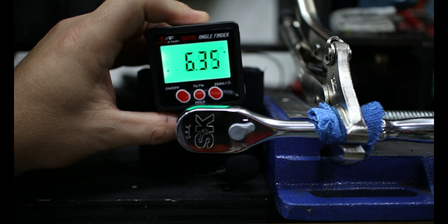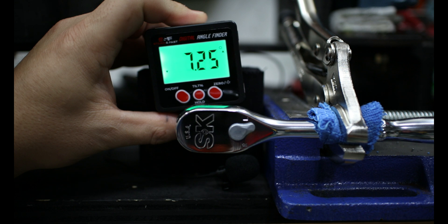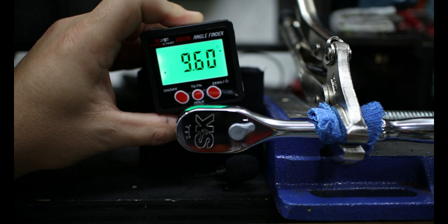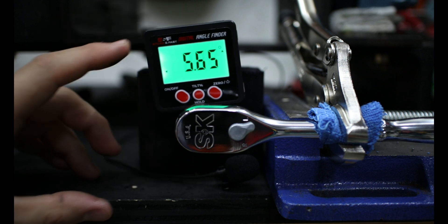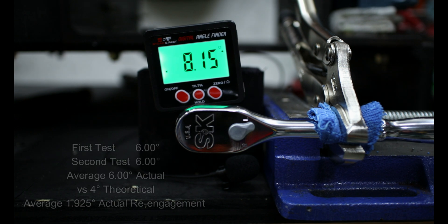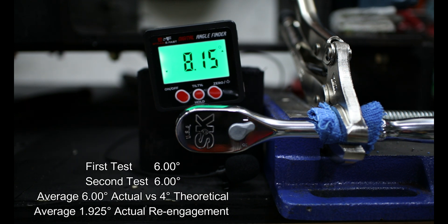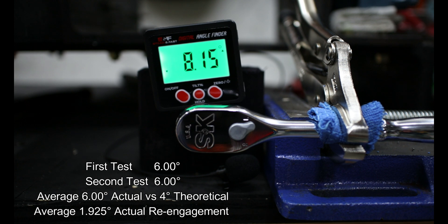We'll go ahead and test things again. And we can see that this roughly clicks over again at around six degrees for movement. And then it comes back and rests at roughly about a 1.95 degree for re-engagement. So first test and the second test average out is an actual of six degrees versus four degrees theoretical, with that re-engagement at roughly 1.925 degrees. So not too bad, really liking it.